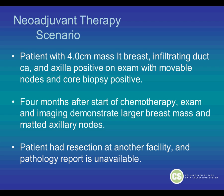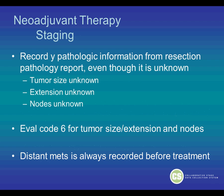The patient then went on to have a resection at another facility, and the pathology report is unavailable. This clearly shows the patient did not respond to treatment, and it was worse after the therapy. So for the staging, you should record the Y-pathologic information from the resection pathology report, even though it is unknown. Record the tumor size as unknown, the extension as unknown, and the lymph nodes as unknown. Use eval code 6 for the tumor size, extension, and lymph nodes. The distant metastasis is always recorded before the treatment.